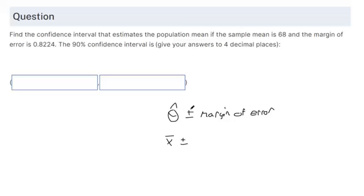But it's just a letter, right? You just plug in the number that you've found to be the mean or the sample proportion and you add or subtract a margin of error of 0.8224.